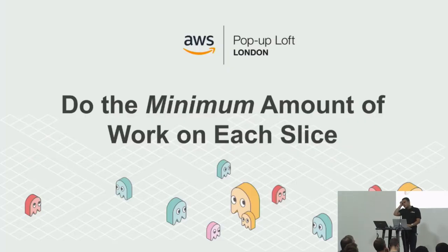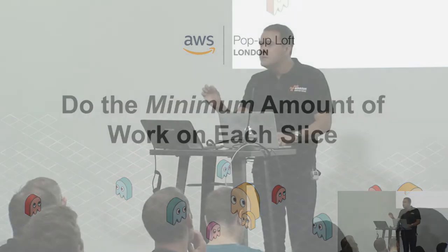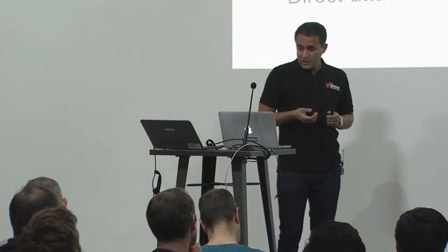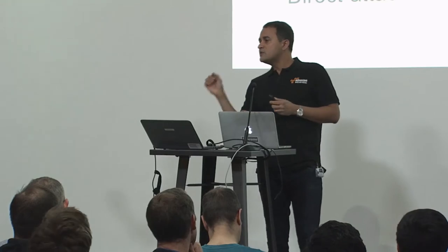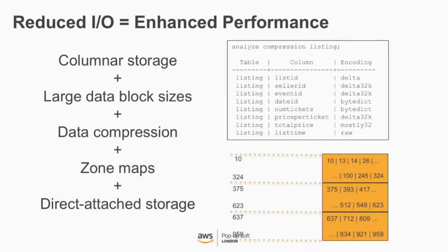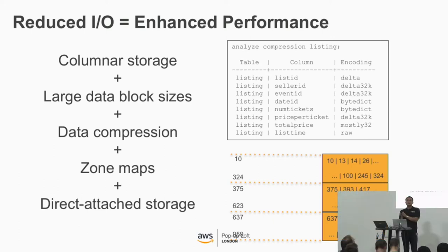What does Redshift do to allow you to do the minimum amount of work for best performance? Columnar storage: Redshift block size is one megabyte, which is more efficient and reduces the number of IO requests. Because data is stored in a columnar fashion with the same data type, it achieves very good compression. We launched a new encoding type called z-standard, which gives great compression for char, varchar, and JSON strings. Redshift also has an in-memory data type called zone maps, which contains the min and max value of every block — so when running a predicate filter, it automatically knows not to touch a particular block, giving great performance.